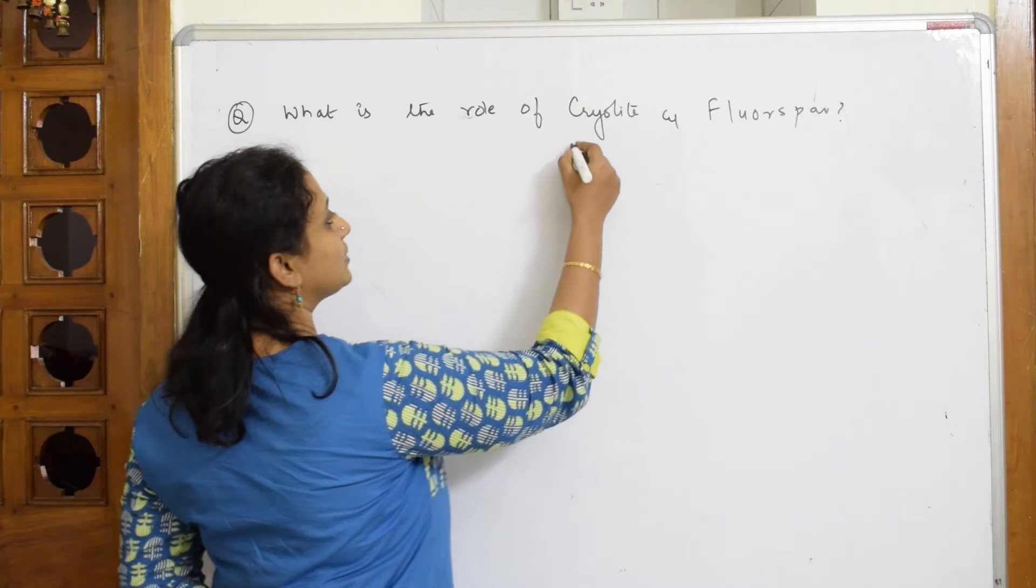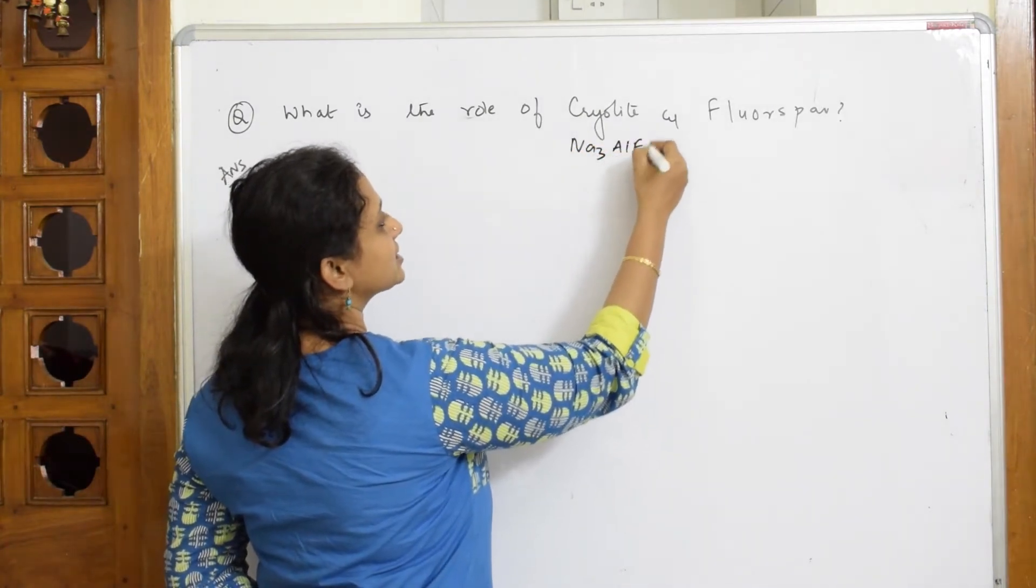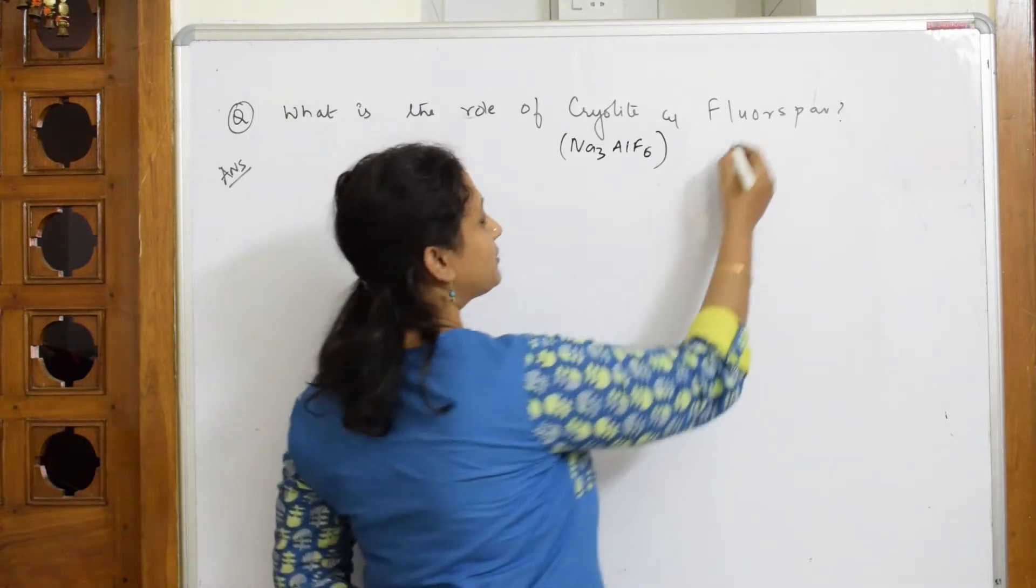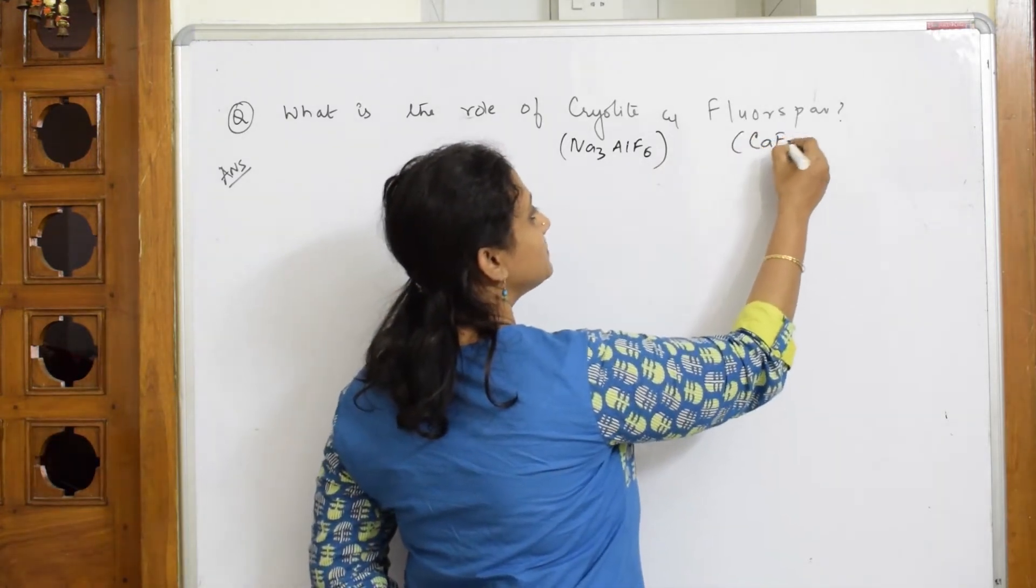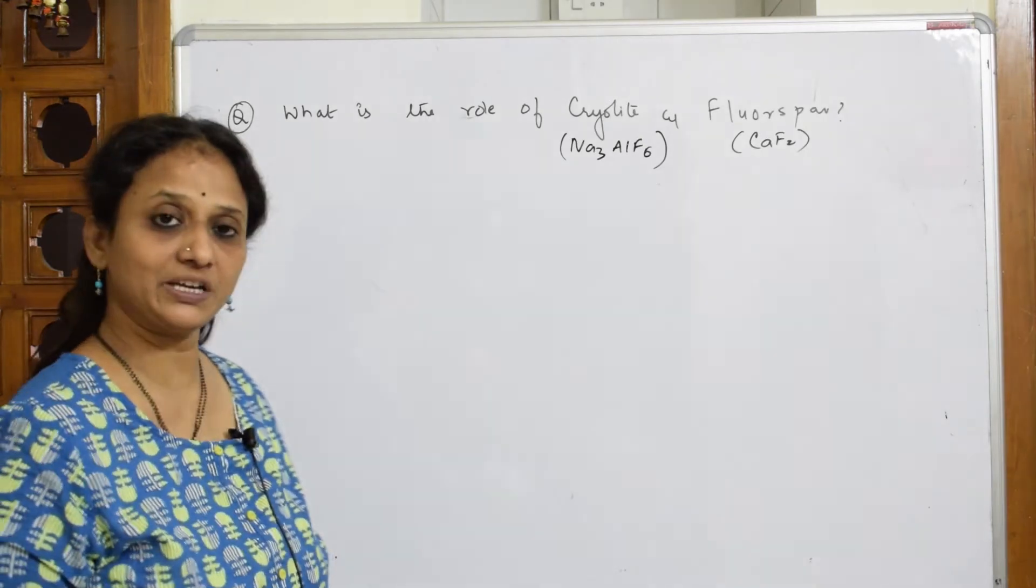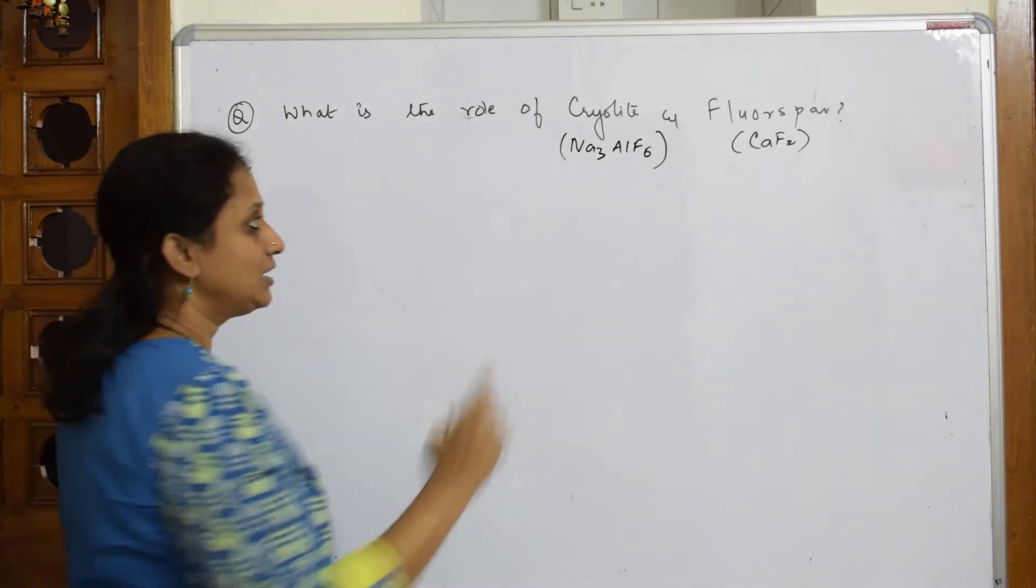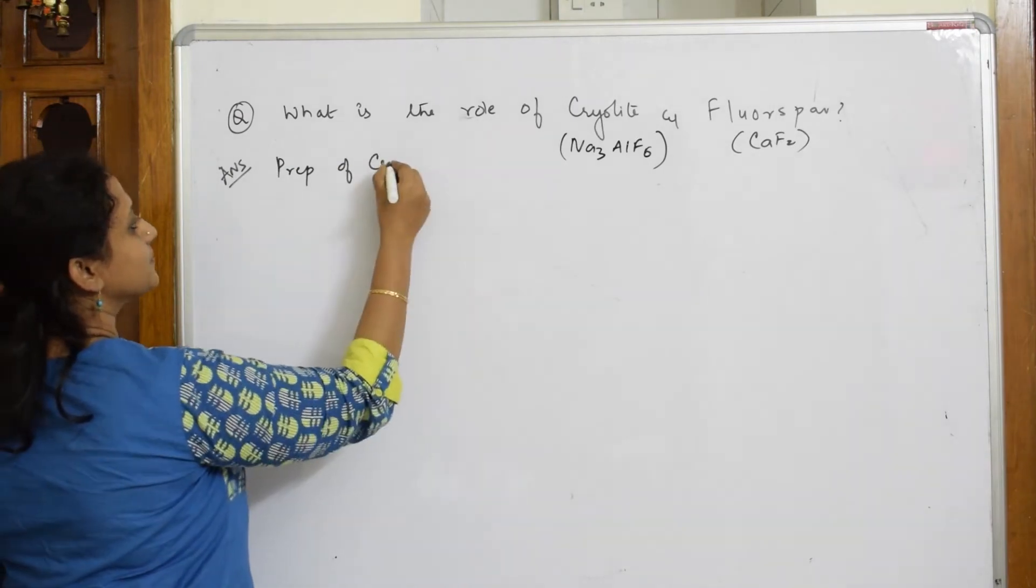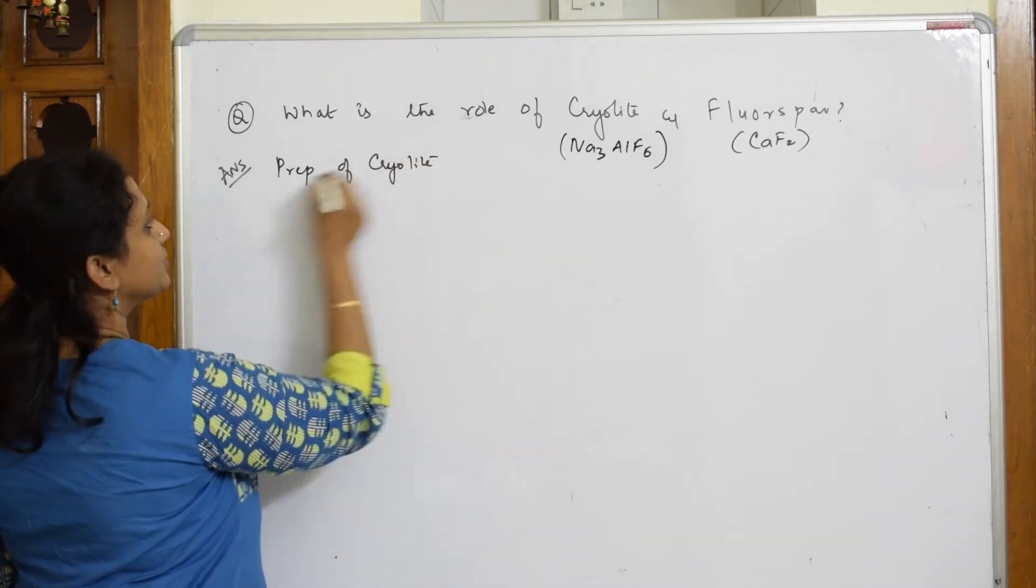What is the formula for cryolite? Na3AlF6 is cryolite. If you practice it, then only you will get it. Fluorspar formula is CaF2. When I have to prepare cryolite, first important thing, let us see how is cryolite prepared and then I will come back to the use.